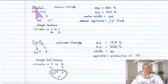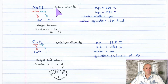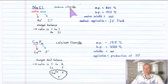The way that you name ionic compounds is pretty simple. The metal cation gets the full element name — sodium — and then the non-metal gets an "-ide" suffix. So it's not sodium chlorine, it's sodium chloride.